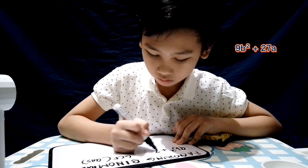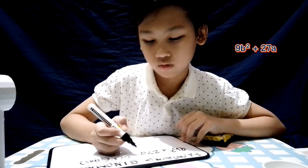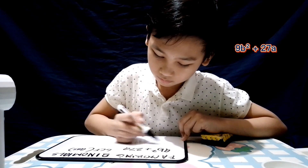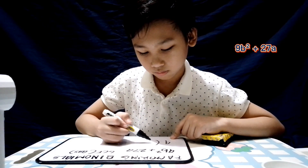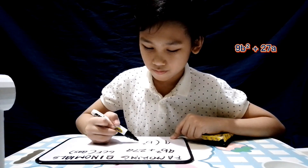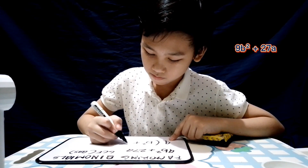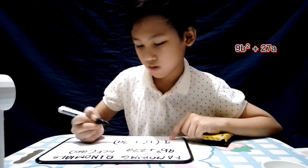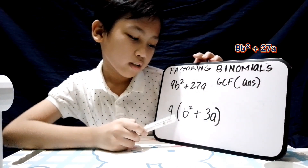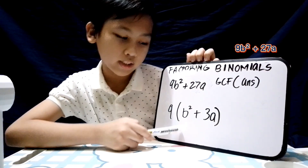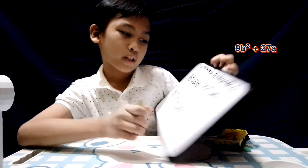Next: 9b squared plus 27a. You have different variables. The answer is 9 times open parenthesis b squared plus 3a, close parenthesis. Very good.